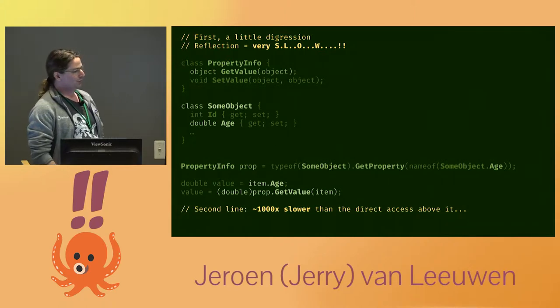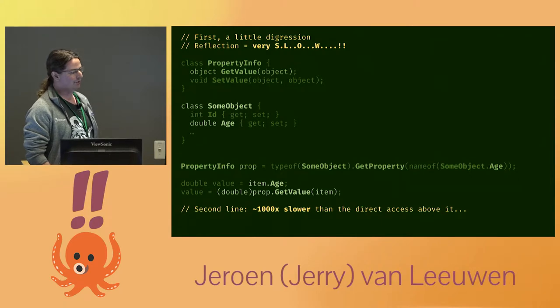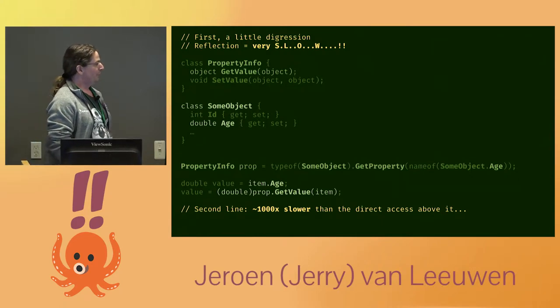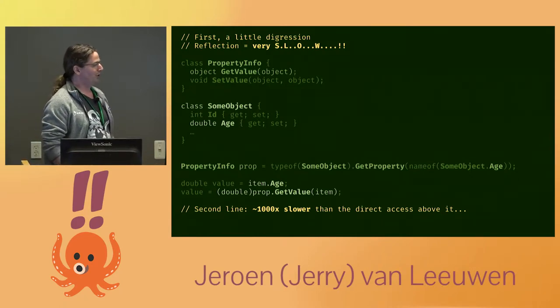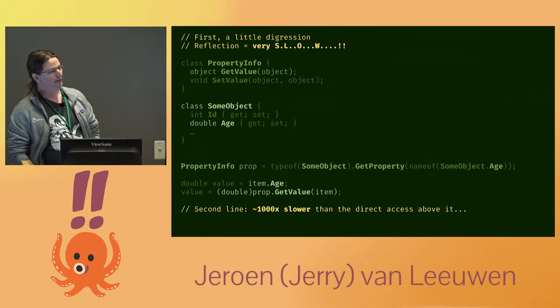A core problem with serialization is that reflection needs to be fast enough to get the job done. Basic reflection in .NET is pretty slow — a thousand times slower than just accessing the property directly.